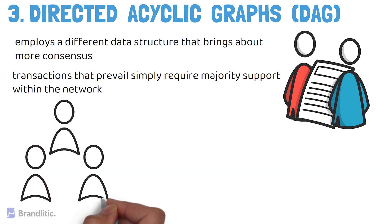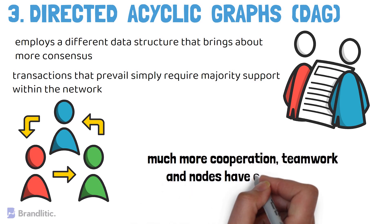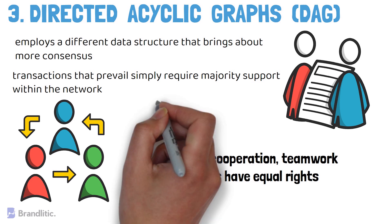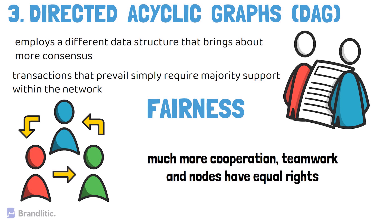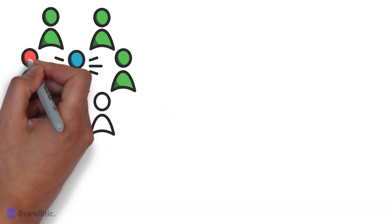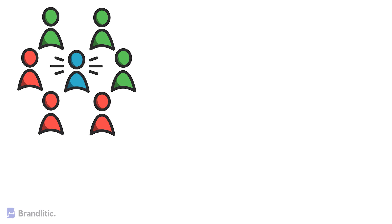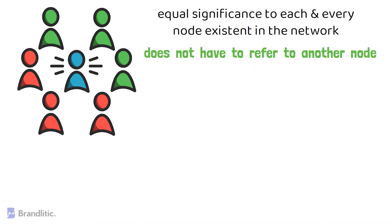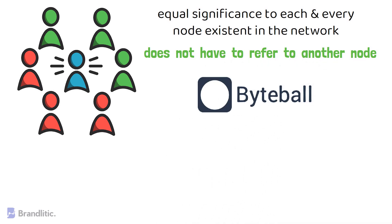In a DAG network there is much more cooperation and teamwork, and nodes have equal rights. Unlike traditional blockchain where proof of work is the key, DAG ensures fairness, giving the impression that the network sticks to the original aim of DLT — to democratize the internet economy. DAG gives equal significance to every node on the network, meaning each node does not have to refer to any other node.